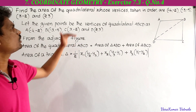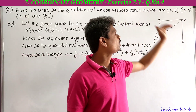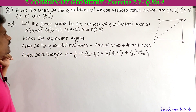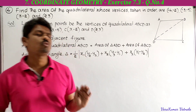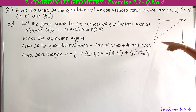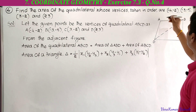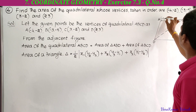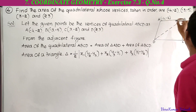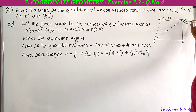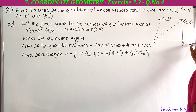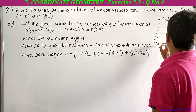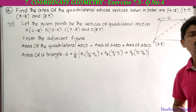Find the area of the quadrilateral whose vertices taken in order are: minus 4 comma minus 2; minus 3 comma minus 5; 3 comma minus 2; and 2 comma 3. So we are given four vertices of a quadrilateral. Let the vertices be A(−4, −2), B(−3, −5), C(3, −2), and D(2, 3).